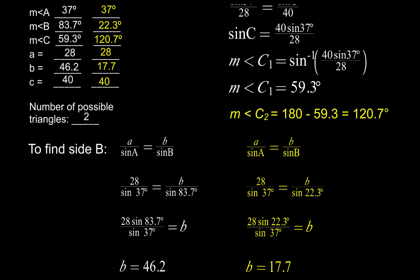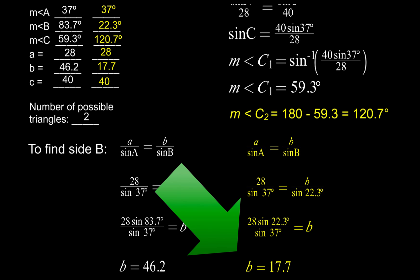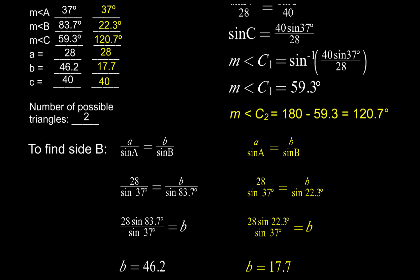Hopefully you came up with 17.7 for the other length of side b. By now you know how to solve an oblique triangle for the ambiguous case — side-side-angle — by using the law of sines. Thanks for watching guys, and have a great day. Peace out.